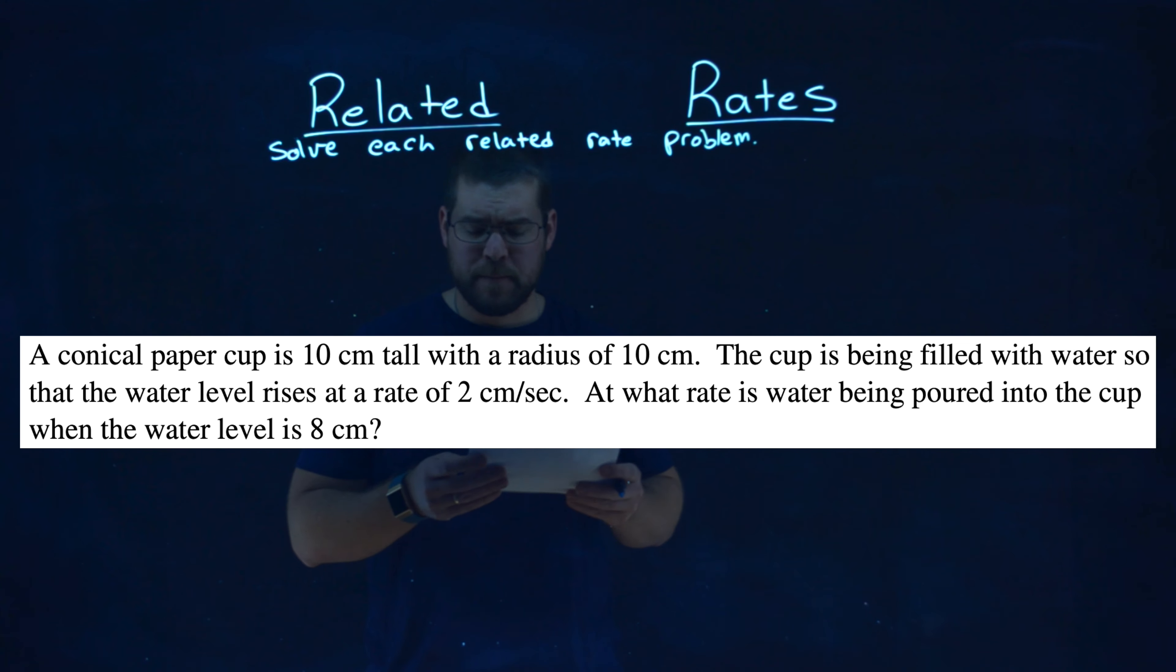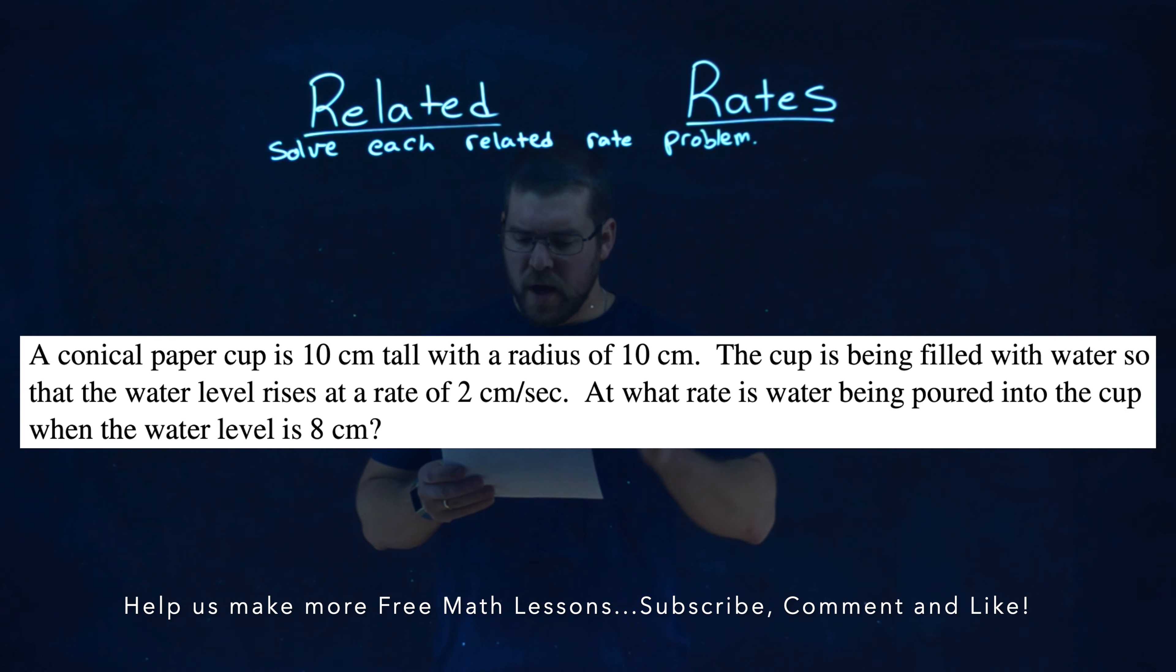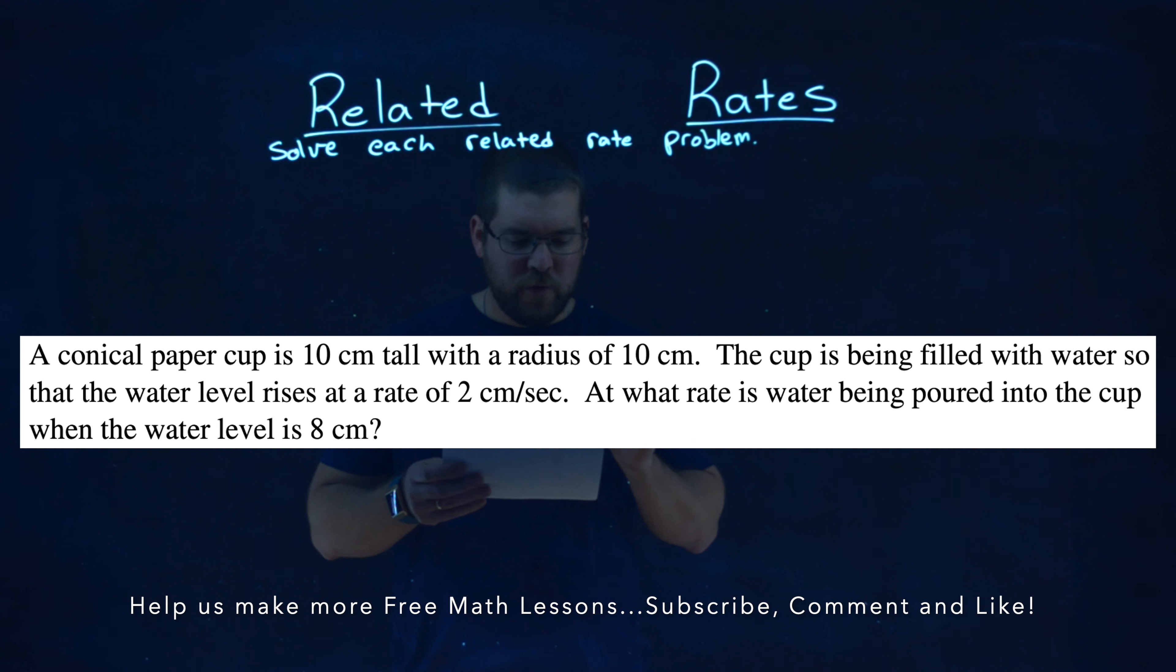We're given this problem right here. A conical paper cup is 10 centimeters tall with a radius of 10 centimeters. The cup is being filled with water so that the water level rises at a rate of 2 centimeters per second. At what rate is water being poured into the cup when the water level is 8 centimeters?